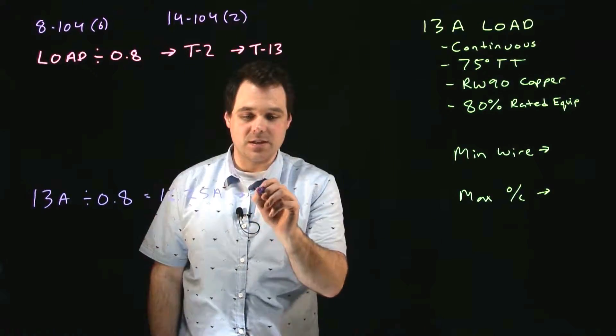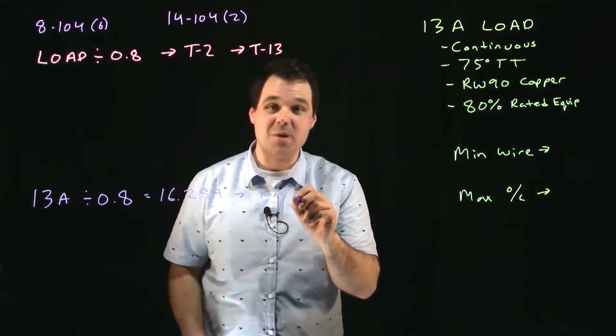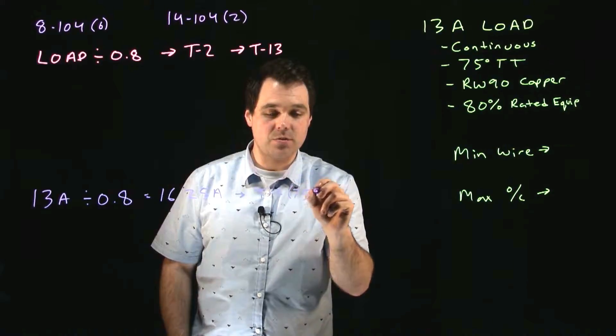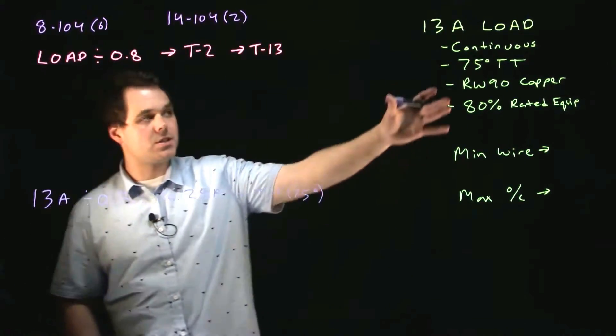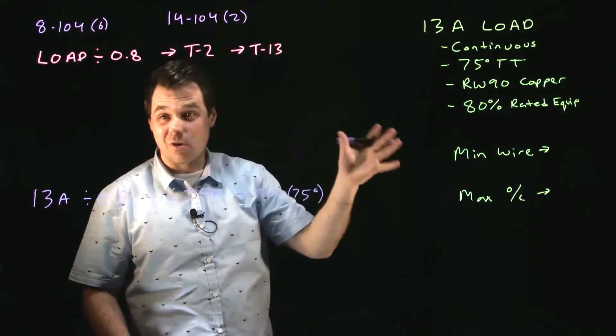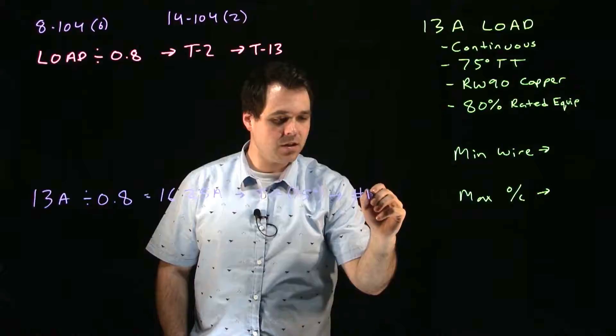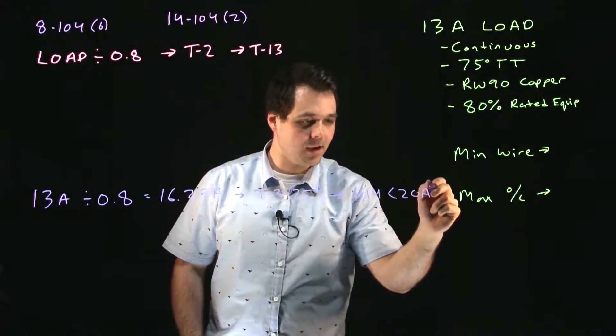16.25 amps. I take that to table 2. This will be my minimum ampacity of my conductor. I'm going to use the 75 degree column. I'm using 75 degree column because that's what all my temperature equipment is. It gives me a number 14 which is said is good for 20 amps.